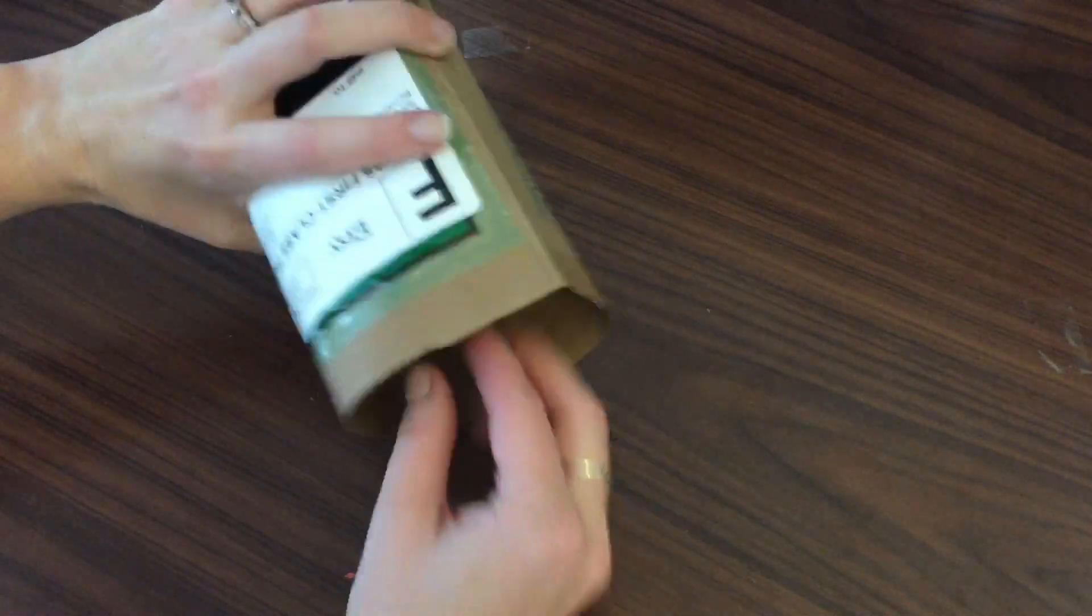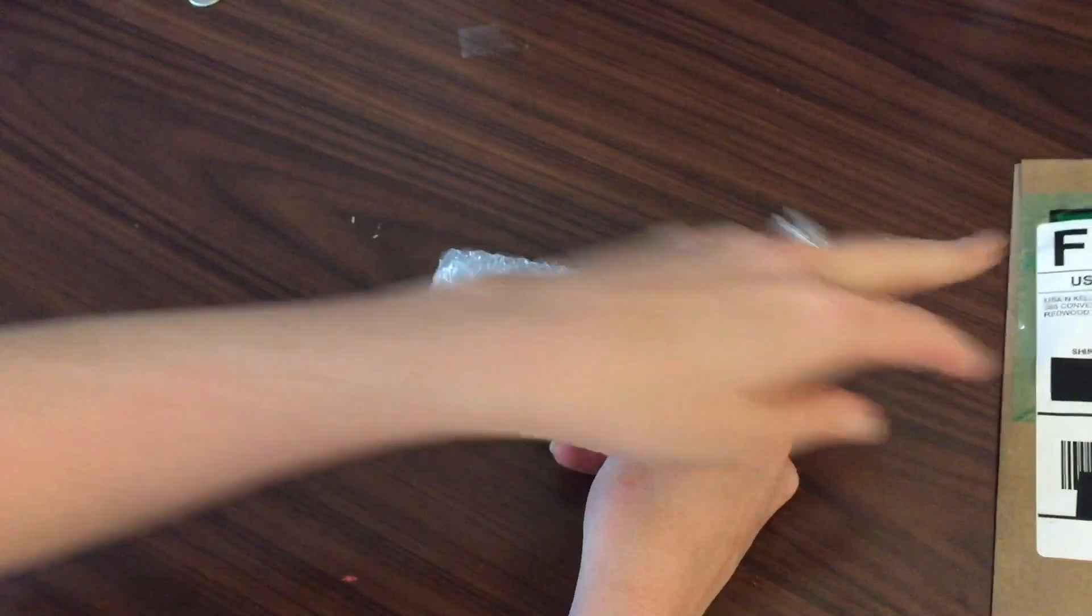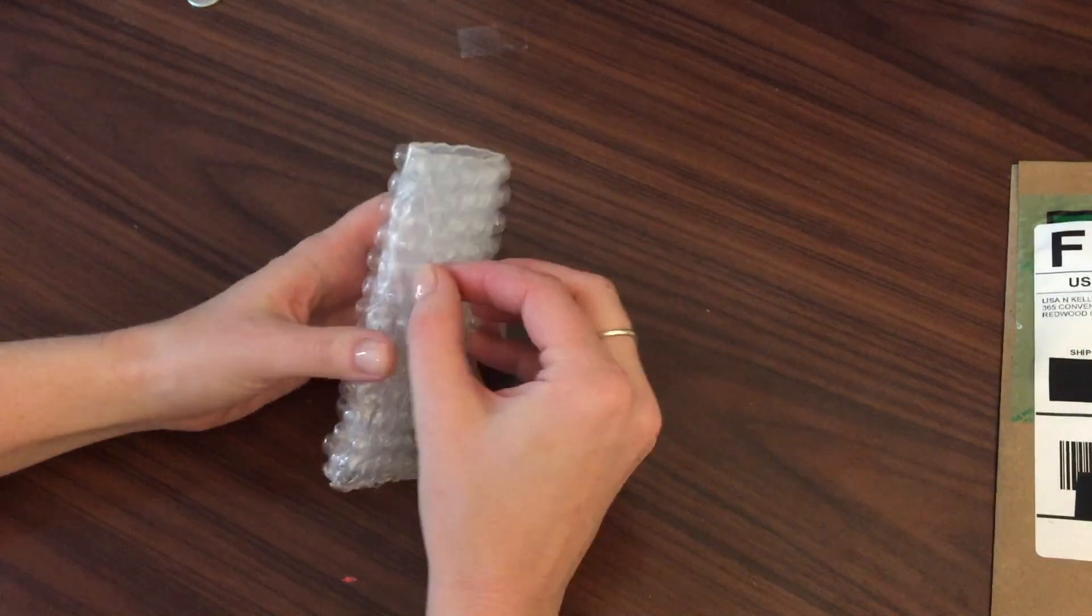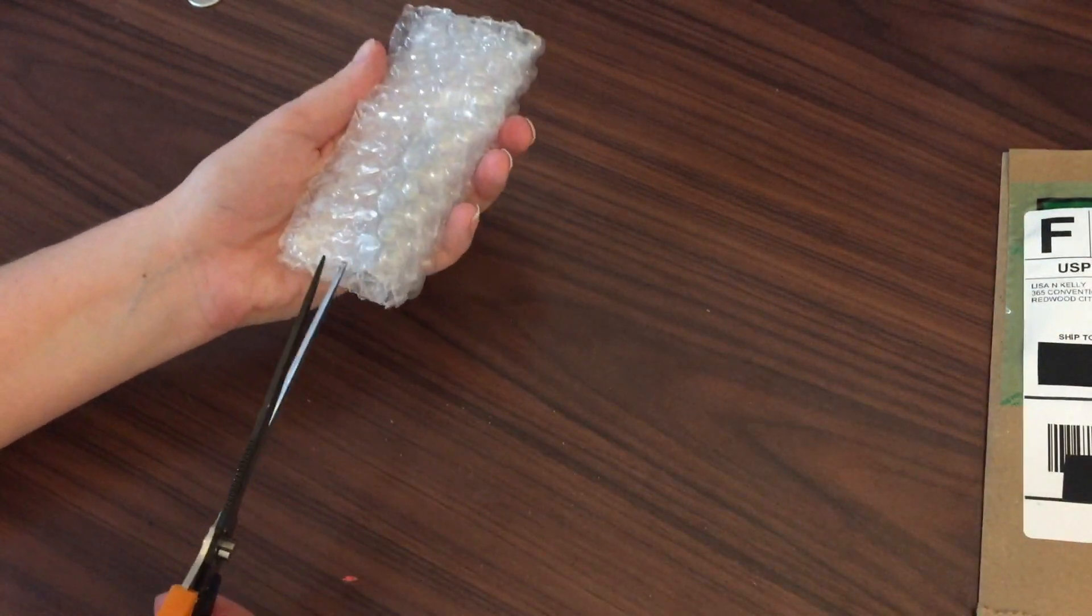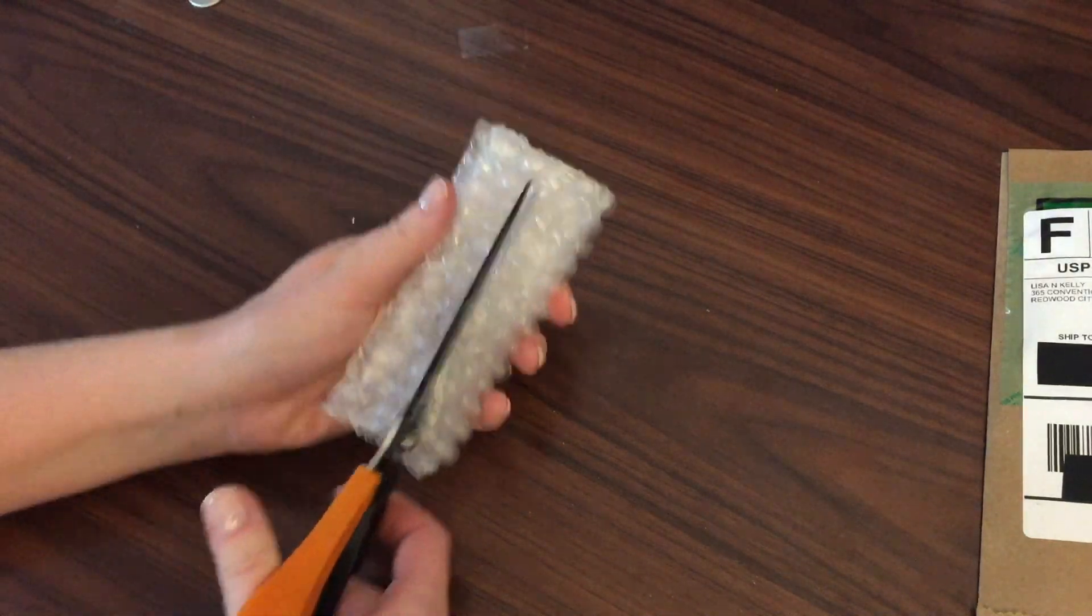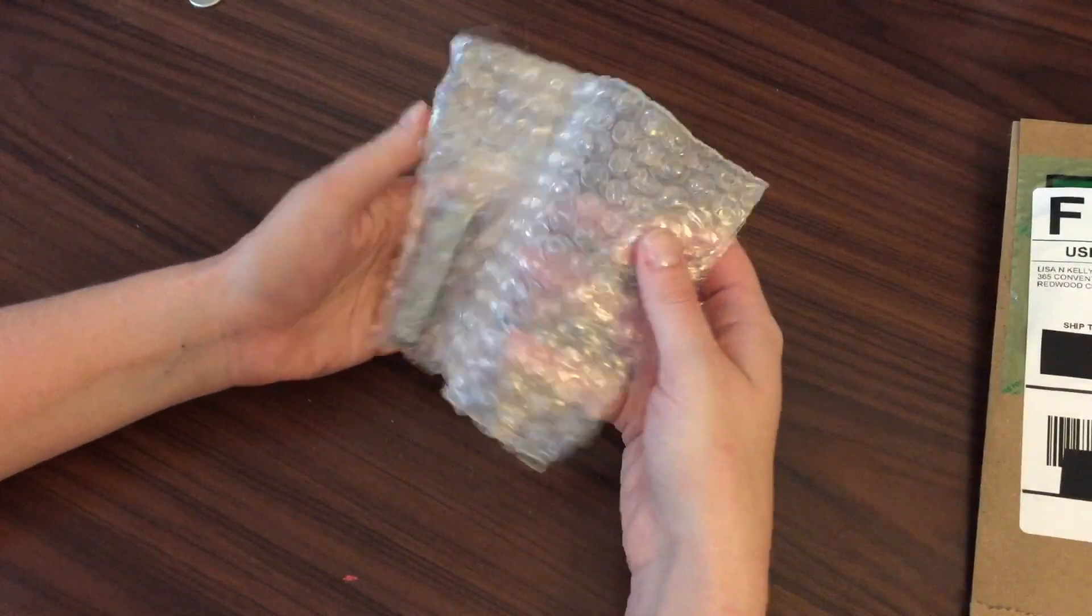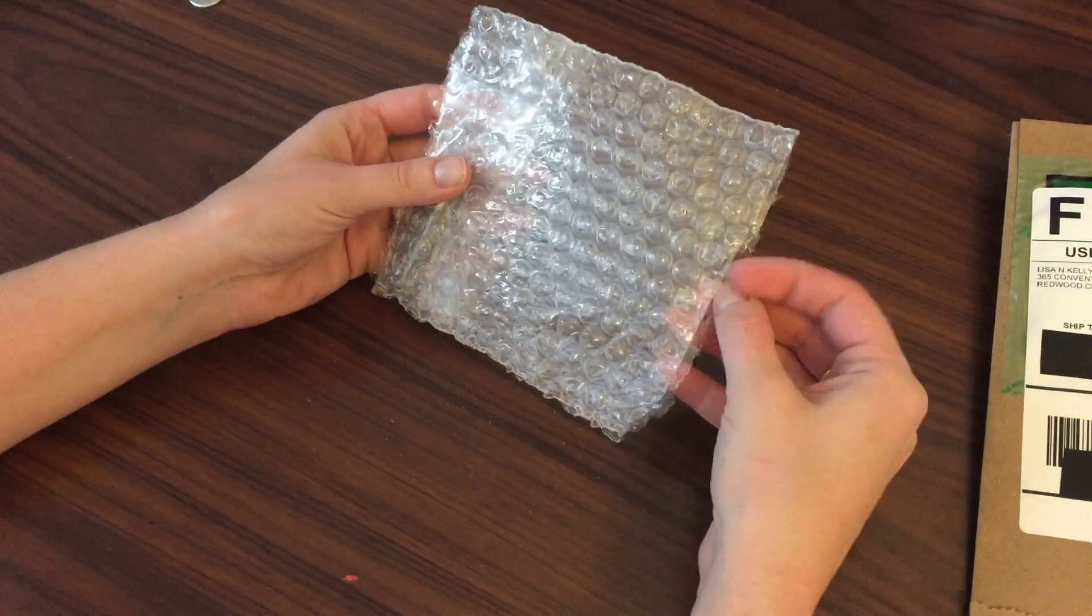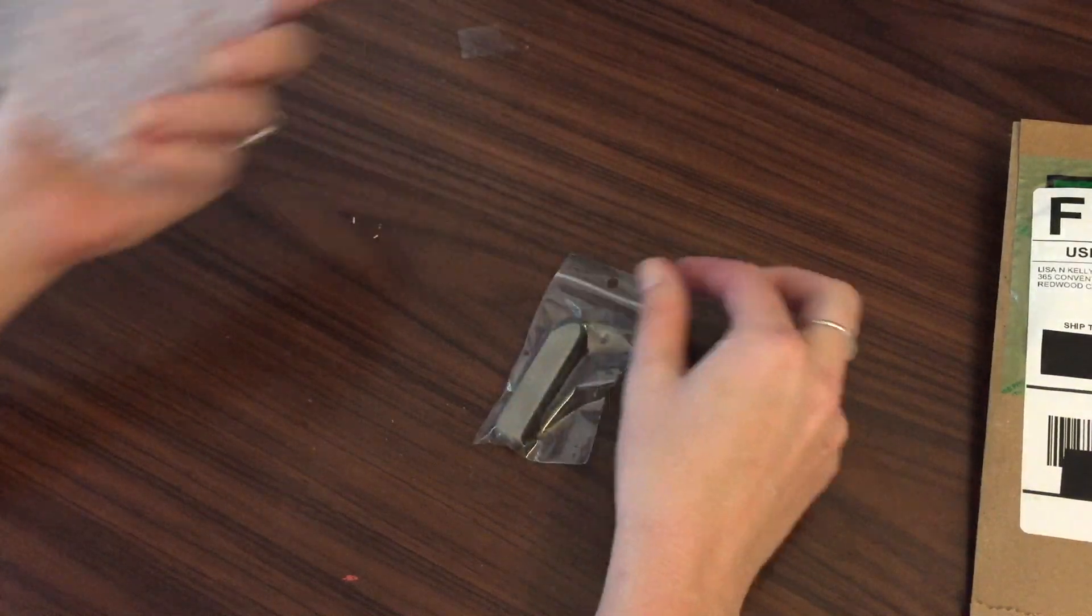And then there's our stamp, all bubble wrapped. Sometimes people have received stamps from them that have had a little rust on it, but it doesn't affect the integrity of the stamp and you can clean it off with steel wool.